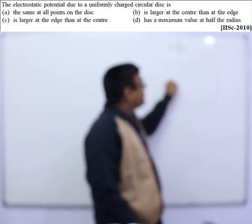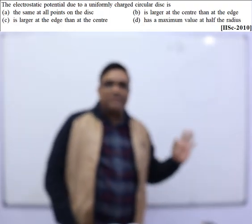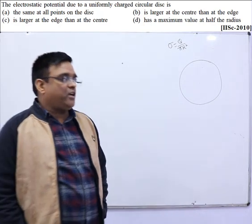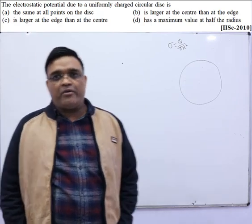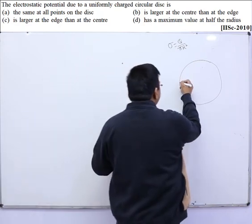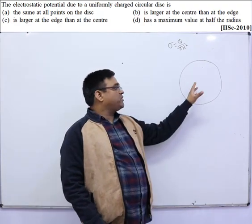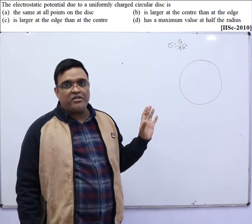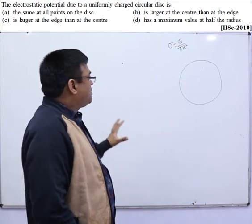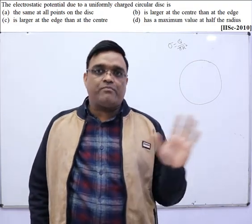We need to compare the potential at the center versus the potential at the edge. Intuitively, the center point is nearer to most of the points on the disc, while the point on the edge is near to some points but very far from others. So we expect the potential at the center to be higher. We can mark this option if in a hurry, but let's verify it properly.